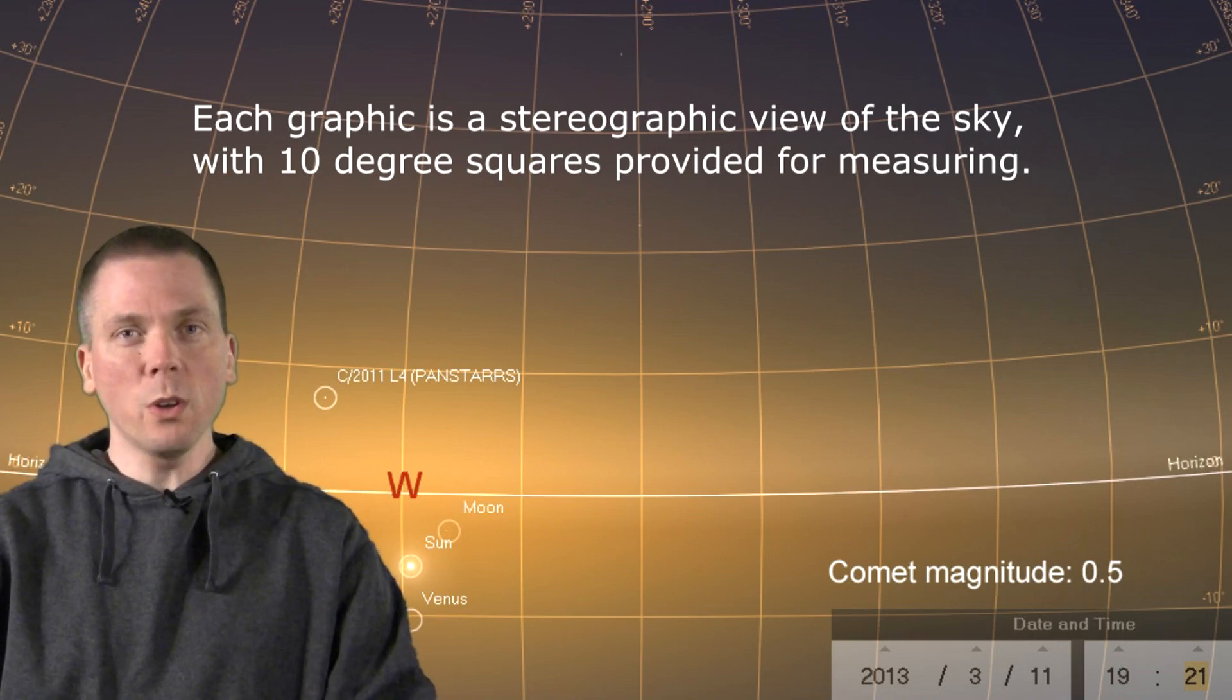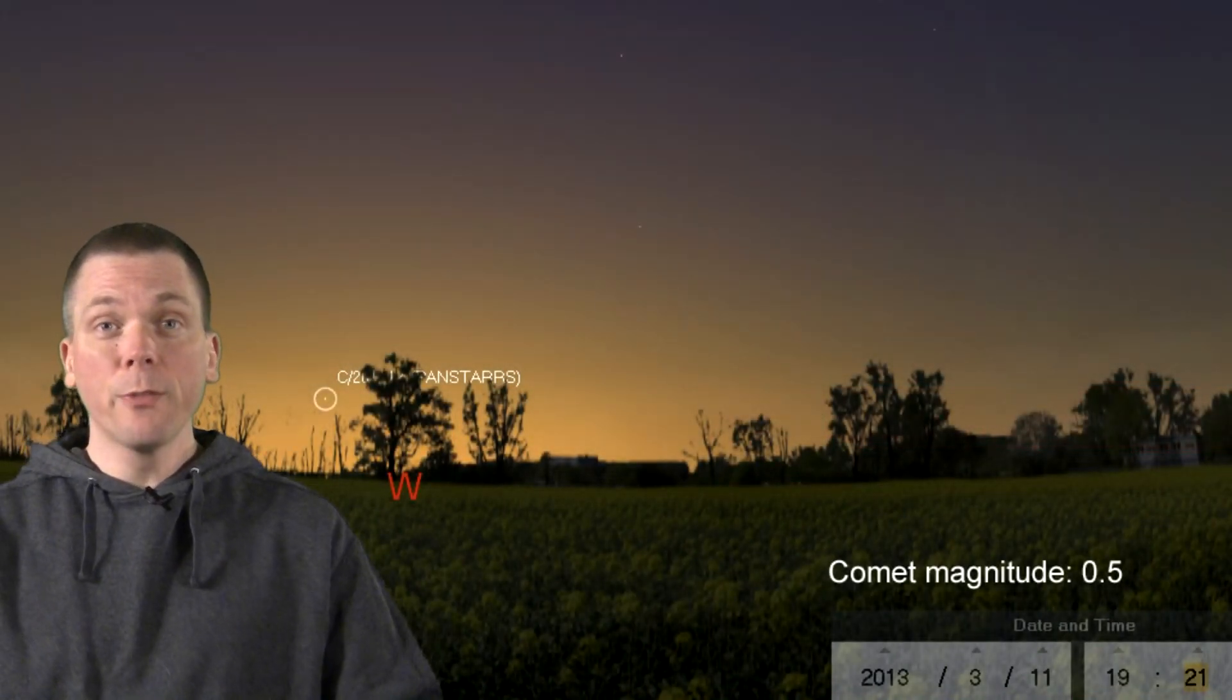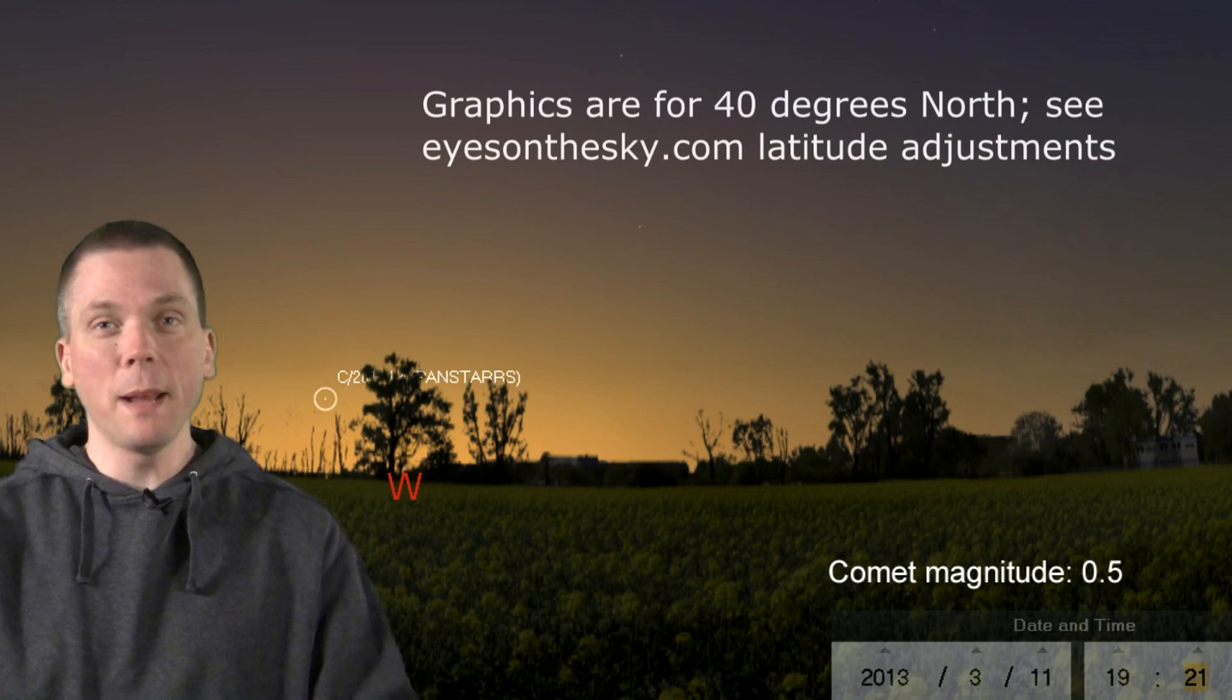When going to observe, look for the glow where the sun has set. It goes up, and then measure up from the horizon to help you find PanStars.